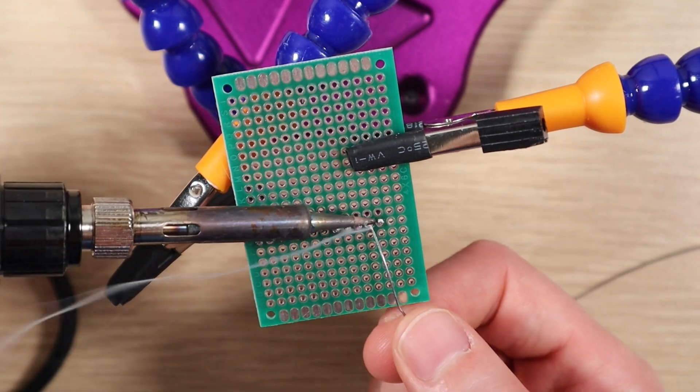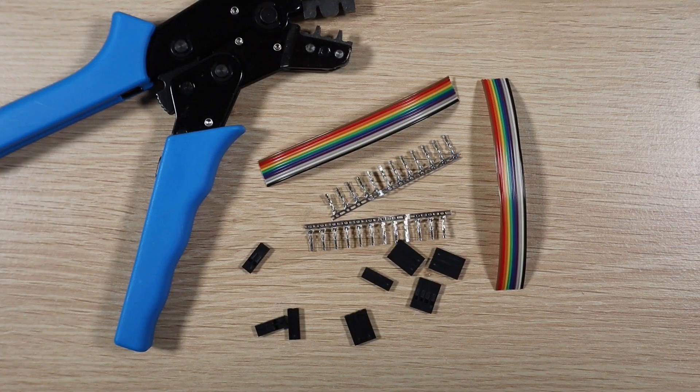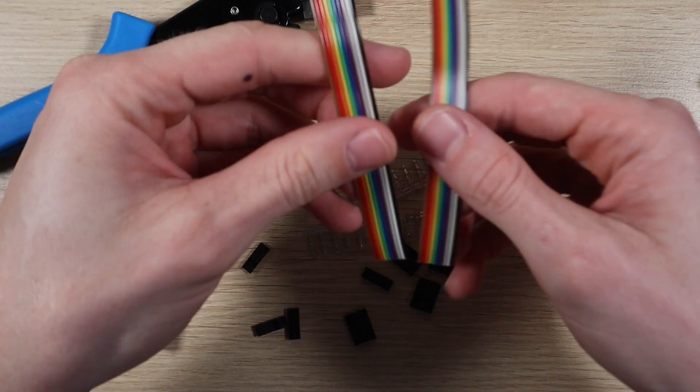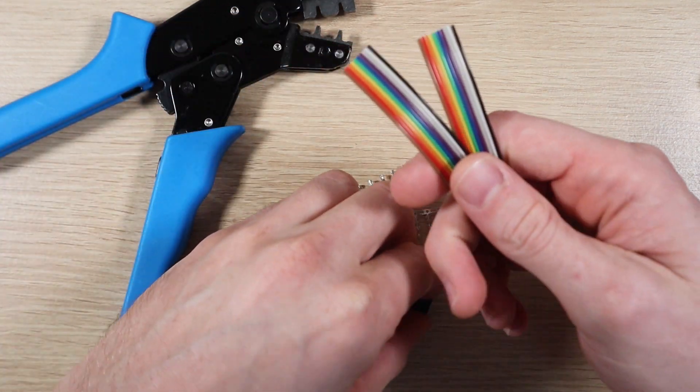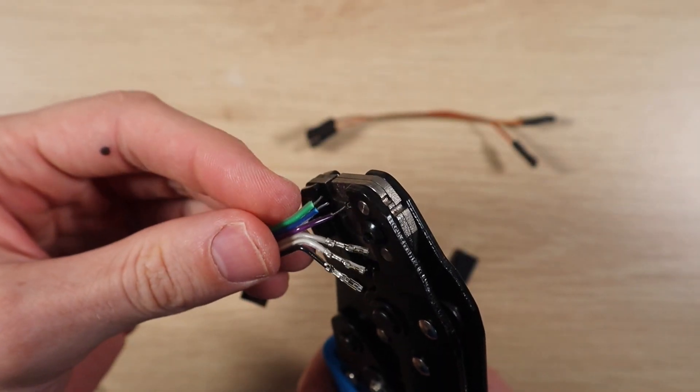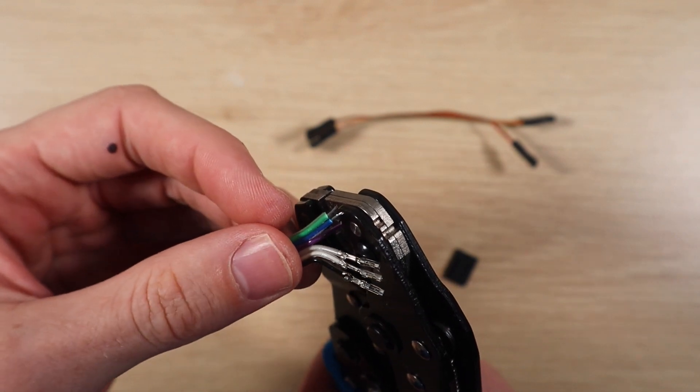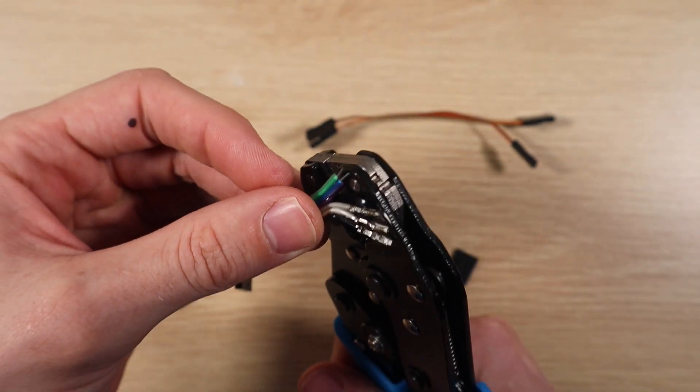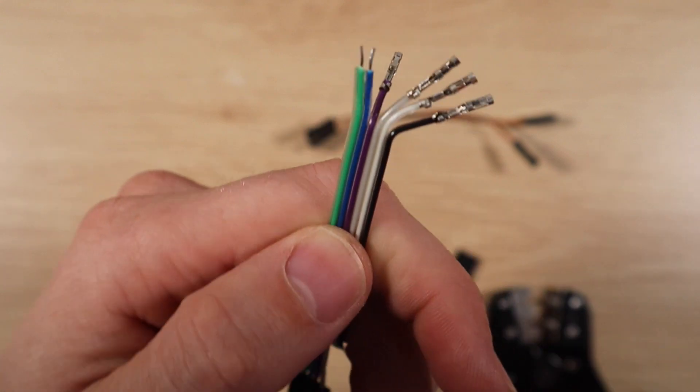I assembled the header pin connections and DHT sensor to a prototyping PCB so the Arduino and stepper motor drivers could just be plugged into it. I then made up some DuPont connector cables to connect the PCB and stepper motor drivers together. You can just use jumpers or create your own header cables too.